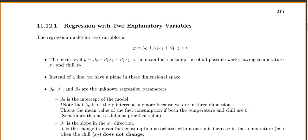Our basic model is y equals some intercept plus slope times my first x variable, plus, notice now I have a beta 2, this is a different slope from my second x variable plus an error term. So this y equals our intercept plus slope for our first x variable plus slope for our second x variable is our mean or average fuel consumption for all of our possible weeks, having temperature x1 and chill x2.